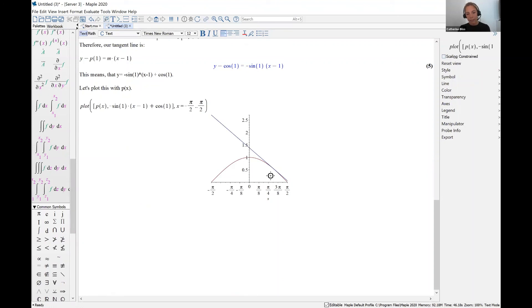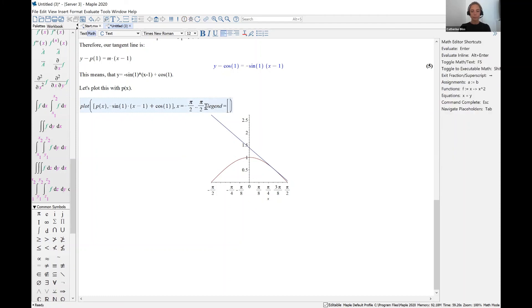We can see that this blue line intersects the cosine curve at only one particular point. And it intersects right there at x equals one. We could also include a legend. And you could label this tangent line if you wanted to. Okay. Thank you.